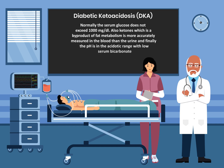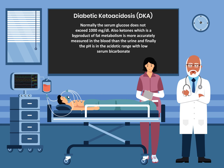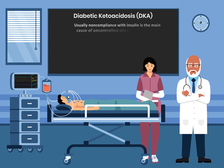Normally, the serum glucose does not exceed 1,000 mg per dL. Also, ketones, which are a byproduct of fat metabolism, are more accurately measured in the blood than the urine. And finally, the pH is in the acidotic range with low serum bicarb.